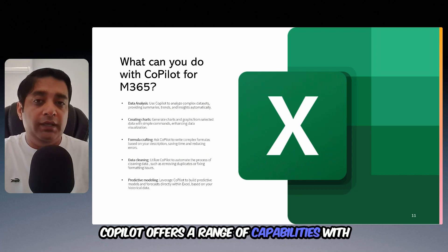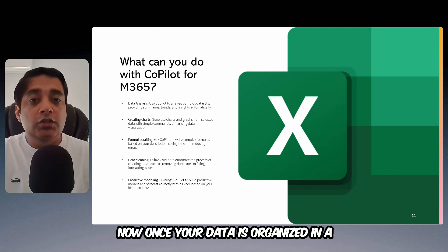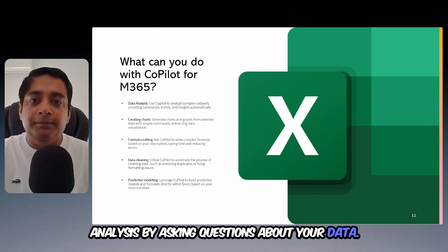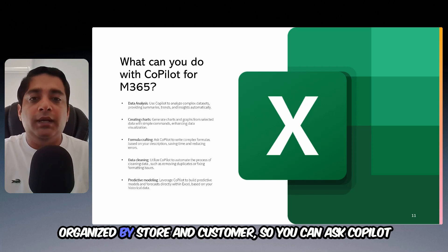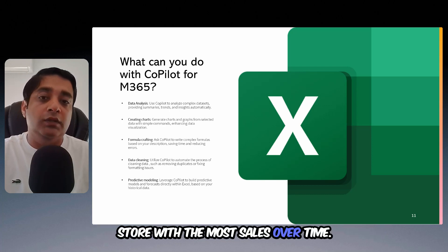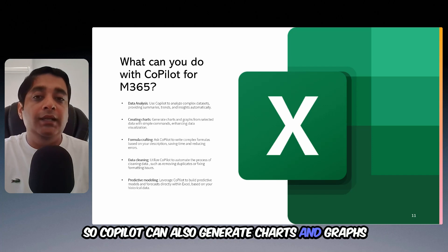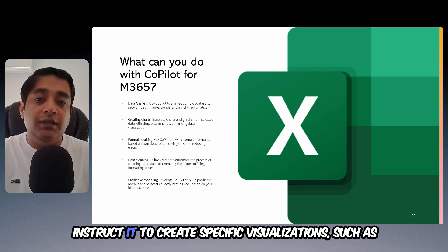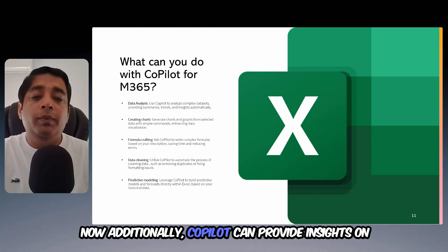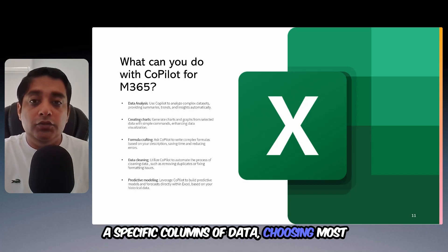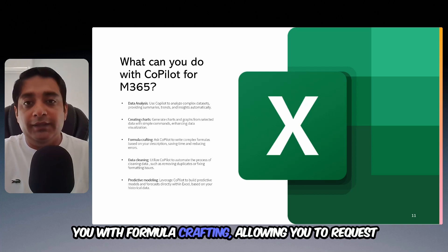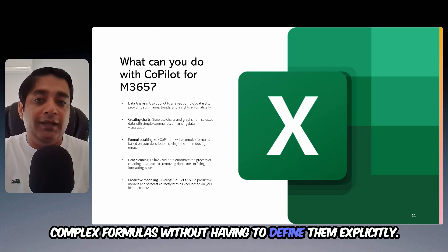Copilot offers a range of capabilities with a primary focus on data analysis. Once your data is organized in a table, you can use Copilot to perform simple analysis by asking questions about your data. For instance, if you have sales data organized by store and customer, you can ask Copilot to identify the customer with the highest sales or the store with the most sales over time. Copilot can also generate charts and graphs based on your selected data, and you can instruct it to create specific visualizations such as a bar graph showing a particular variable. Additionally, Copilot can provide insights on specific columns of data, choosing the most relevant visualizations based on the context. Copilot can also assist you with formula crafting, allowing you to request complex formulas without having to define them explicitly.